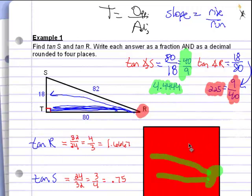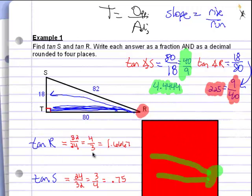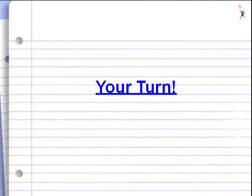Here are my answers. The tangent of angle R is 4 over 3, which reduces to 1.6667. The tangent of angle S is 3 over 4, which reduces to 0.75. Hopefully you were able to find those. Now let's take a look at your homework where we're going to practice more.